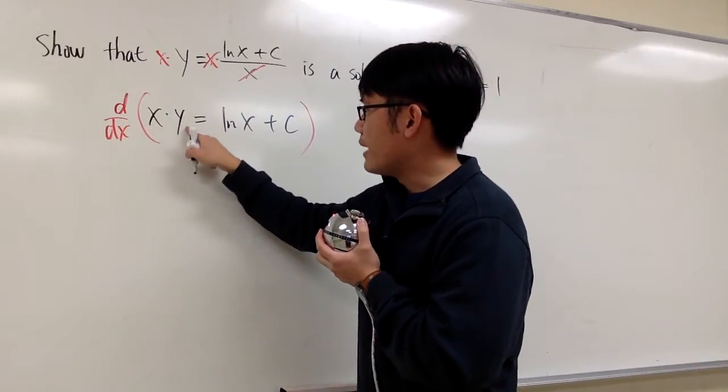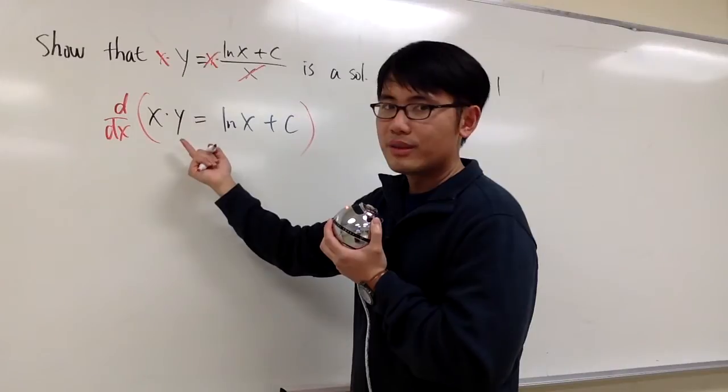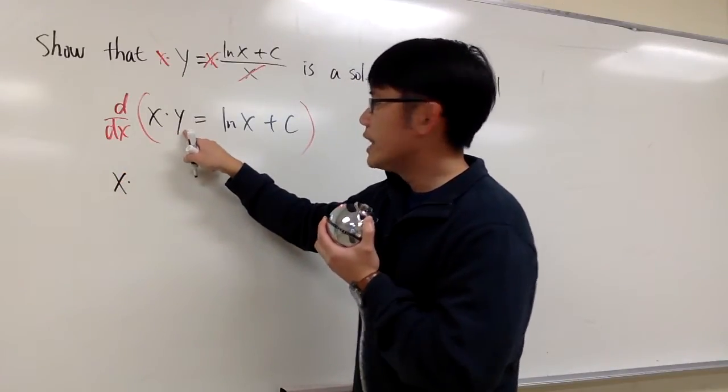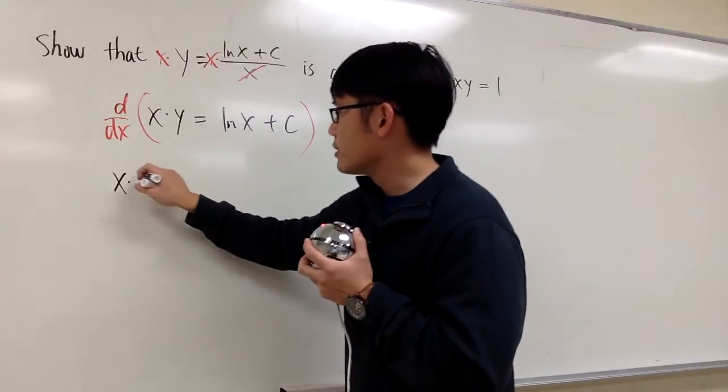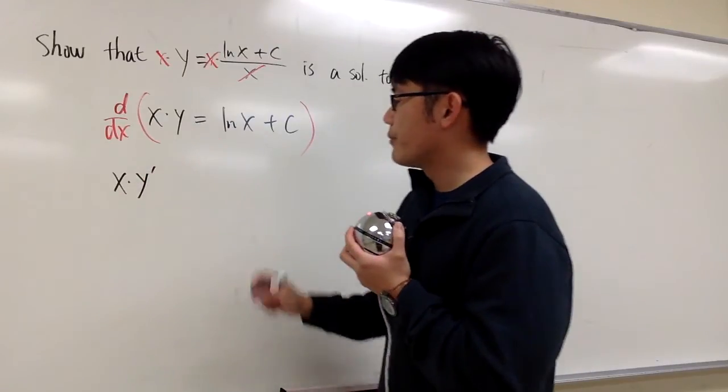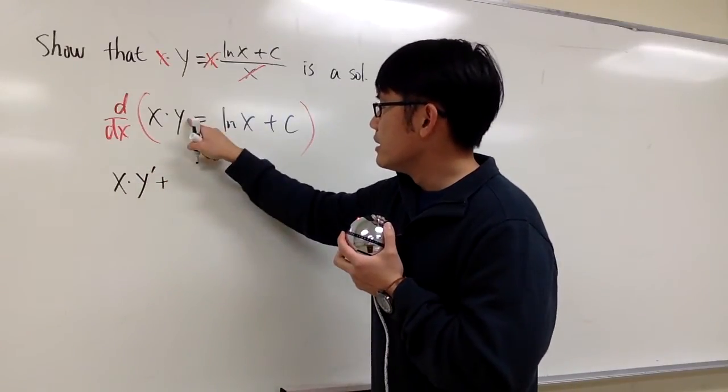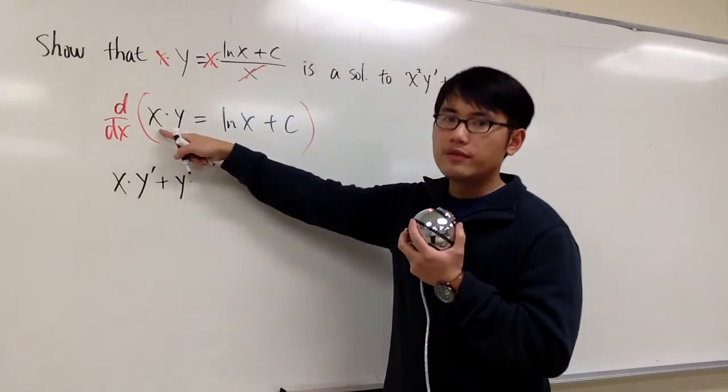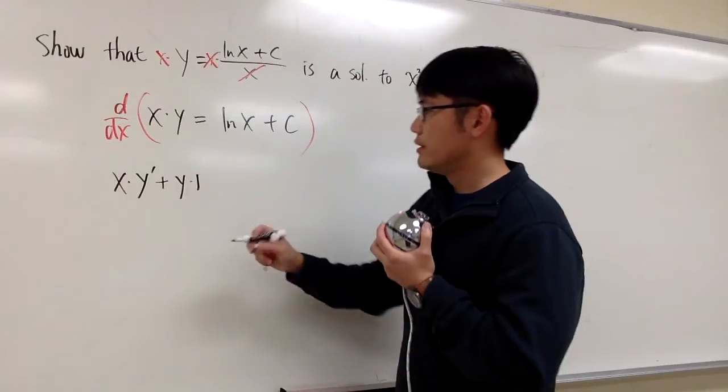Okay, on the left-hand side, we have x times y, so we have to use the product rule. So we keep the first times the derivative of the second, and the derivative of the second is exactly y prime. So we have y prime right here. And then we add the second, which is y, times the derivative of the first. The derivative of x is just 1. So that's it.